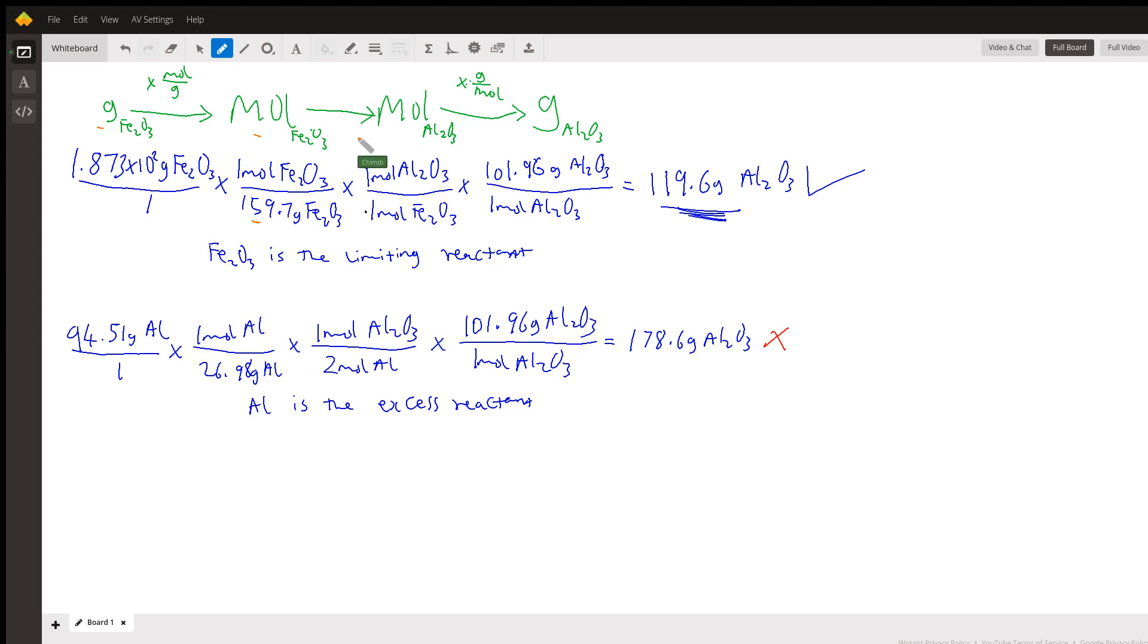The last step is converting aluminum oxide from moles to grams. Based on this calculation, we cancel these units—this unit cancels this unit, and this cancels this unit, leaving our answer in grams.